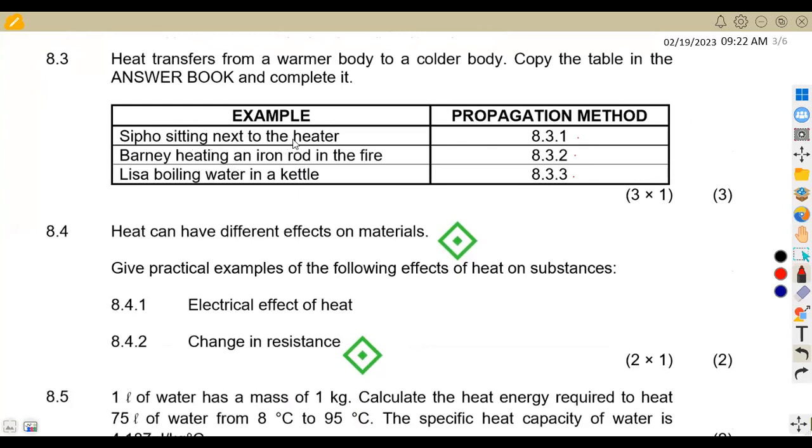We are given an example here, then the propagation method. SIPO sitting next to the heater. How is heat going to be transferred from the heater to SIPO? This is by radiation. Then we are given, badly heating an iron rod in the fire. So this is iron, so it's going to be by conduction. Then whenever you're talking of water, boiling water, the movement of heat in water, that is convection. So you are going to redraw this table with this answer: radiation, conduction, and convection.